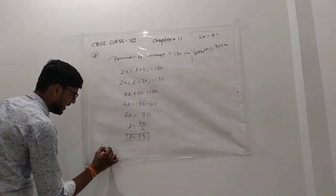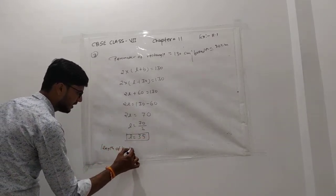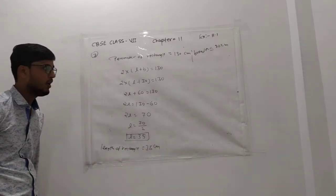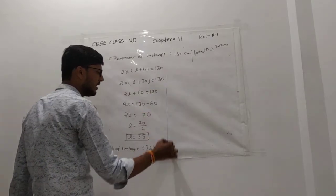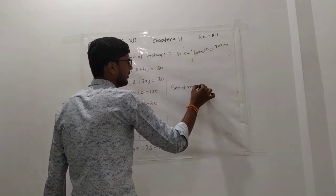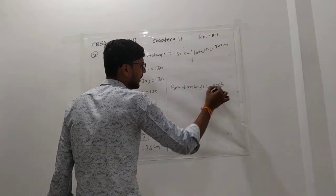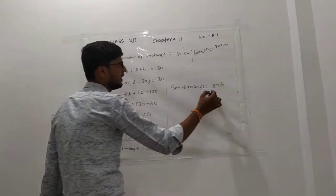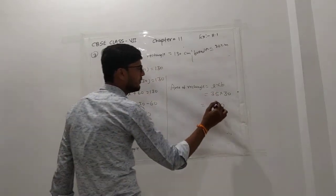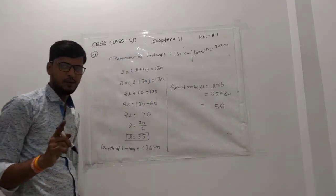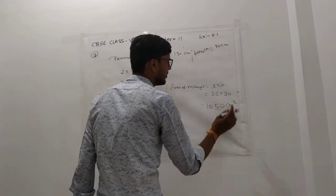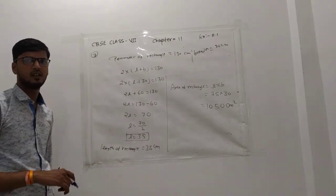The length of the rectangle is 35 cm. Also find the area of rectangle: area = length × breadth = 35 × 30. Calculating: 35 × 30 = 1050 cm². So 1050 cm² is the area of the rectangle.